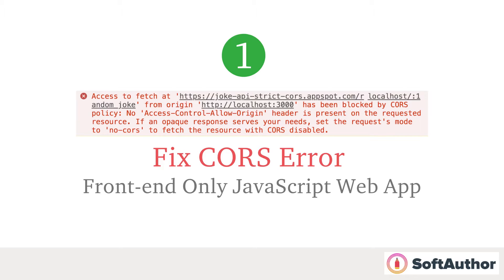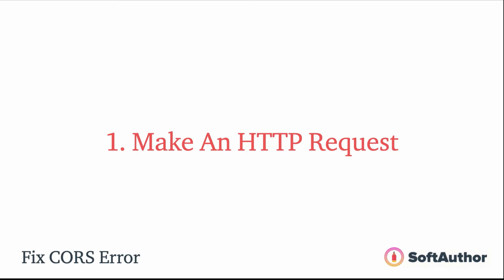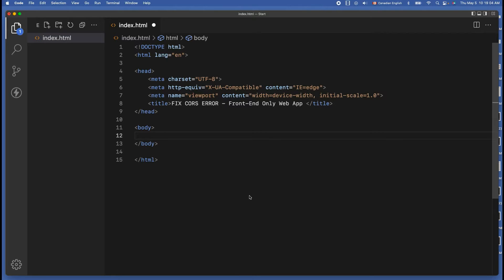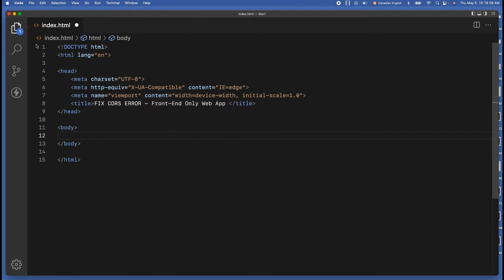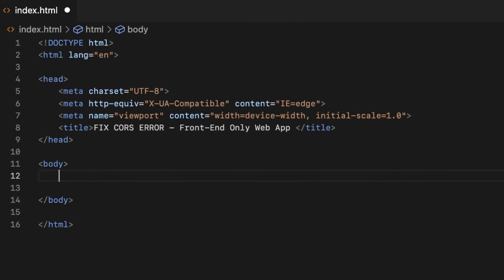By the end of this lecture, I will be showing you how to quickly fix the CORS error from a simple front-end JavaScript app. In order to see the CORS error, we need to make a simple HTTP request to an external API server directly from our JavaScript app. I have a simple index.html file with a basic HTML template. Now let's make an HTTP request.